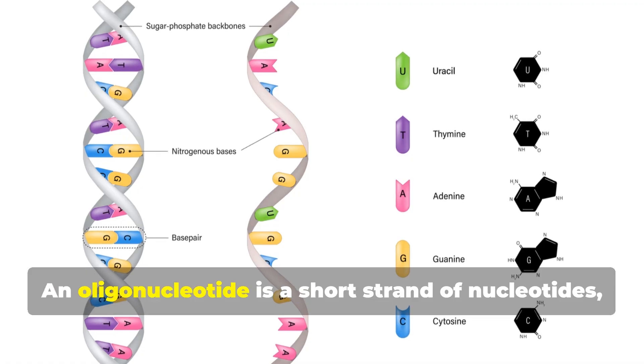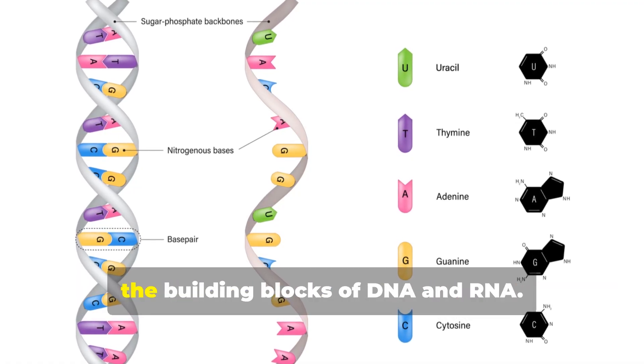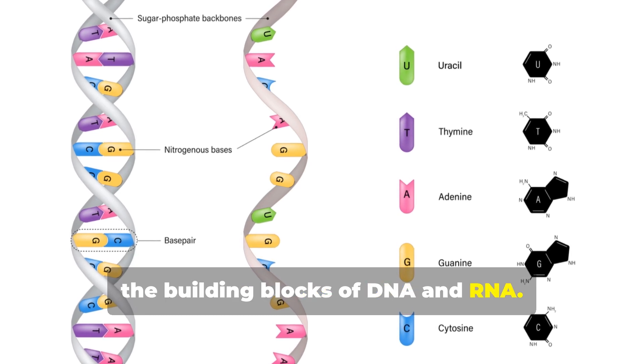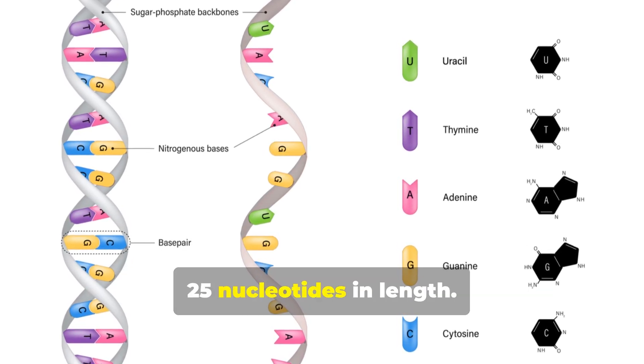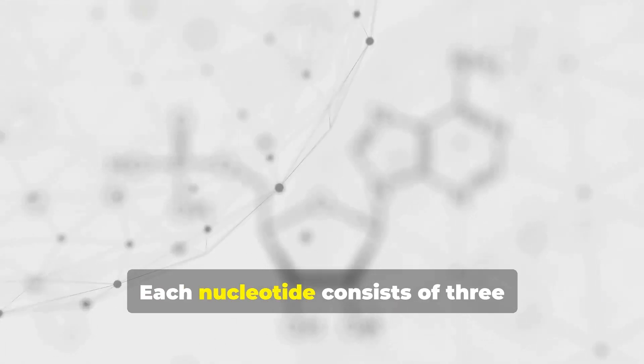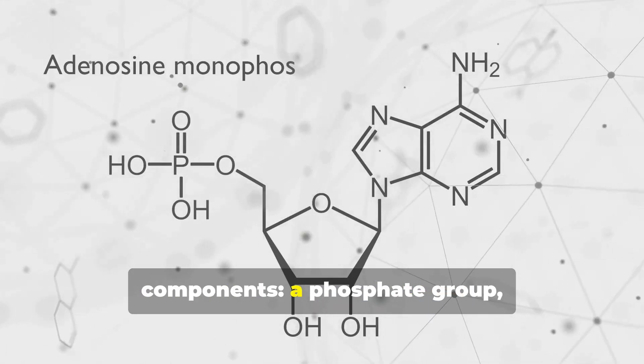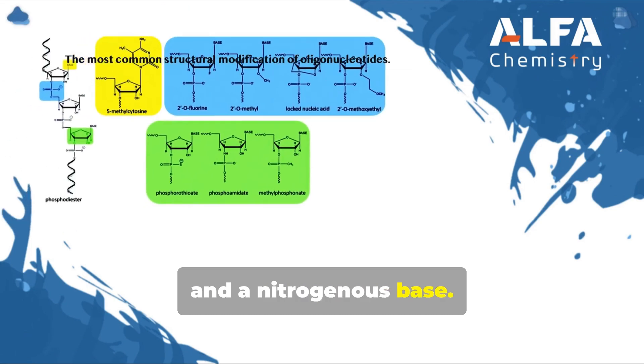An oligonucleotide is a short strand of nucleotides, the building blocks of DNA and RNA. These strands typically range from 2 to 25 nucleotides in length. Each nucleotide consists of three components: a phosphate group, a sugar molecule and a nitrogenous base.